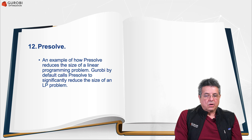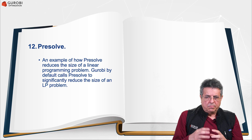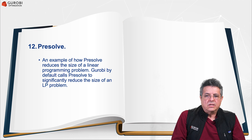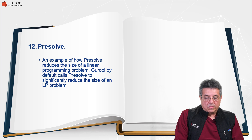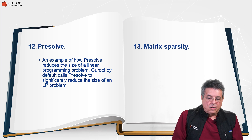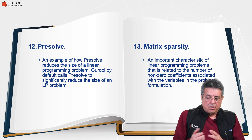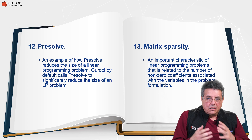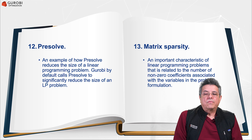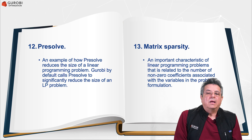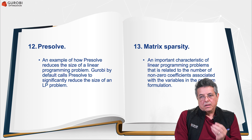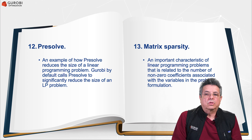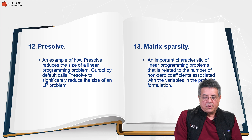Another feature we will discuss is pre-solve — an approach used before solving the linear programming model to reduce the size of the LP problem. This is very important when solving large LP problems. We will also talk about matrix sparsity, which relates to the number of non-zero coefficients associated with the variables in the problem formulation. This characteristic of sparse matrices can be explored to reduce the time needed to solve an LP problem.